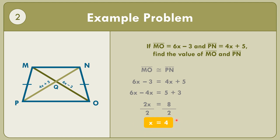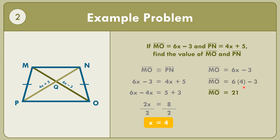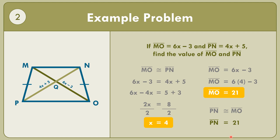With x equal to 4, we replace to solve for line segment MO: 6 times 4 minus 3 equals 24 minus 3, which equals 21. So line segment MO equals 21. Since diagonals of an isosceles trapezoid are congruent, line segment PN is also equal to 21.